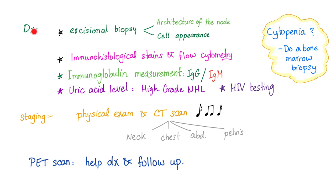How to diagnose non-Hodgkin's lymphoma? Excisional biopsy — not fine needle aspiration. We need excisional biopsy to help the pathologist determine the architecture of the node as well as cell appearance. Immunohistological stains and flow cytometry. Immunoglobulin measurements, because some have IgG, others have IgM. Uric acid levels, especially in high-grade non-Hodgkin's lymphoma, which can have very high uric acid levels. Plus HIV testing, because non-Hodgkin's lymphoma may be common in AIDS patients.